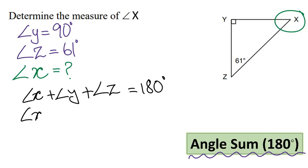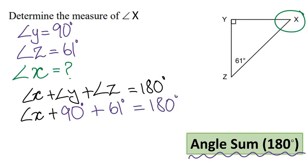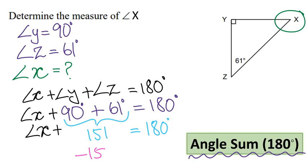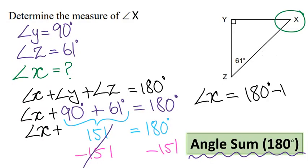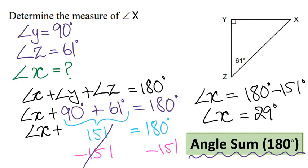We don't know what angle x is, so let's keep that. We know angle y is 90 degrees and angle z is 61 degrees, which equals 180 degrees. Let's combine like terms: 90 plus 61 is 151. Now we are going to subtract 151 from both sides, leaving us with angle x equals 180 degrees minus 151 degrees. The answer is 29 degrees. So angle x is 29 degrees.